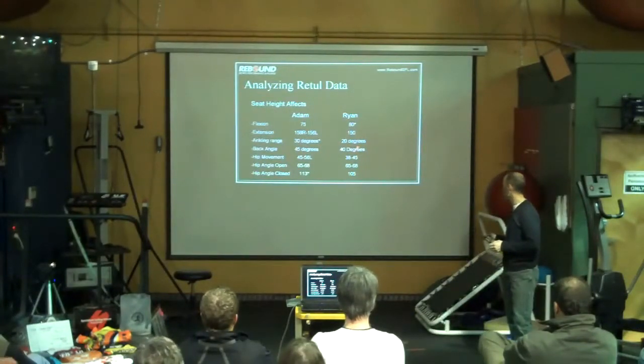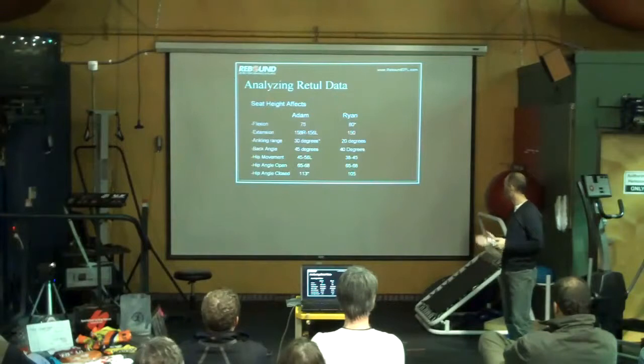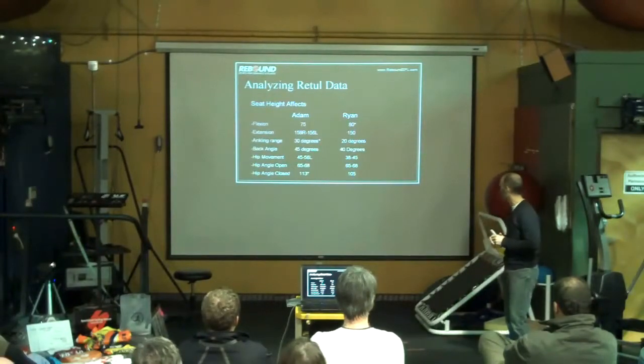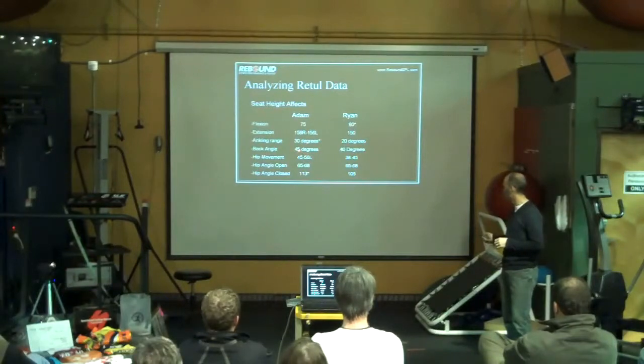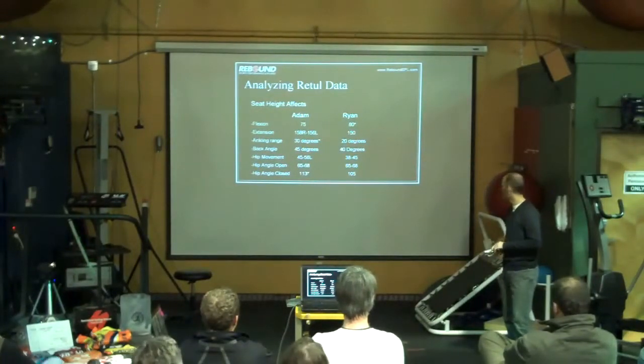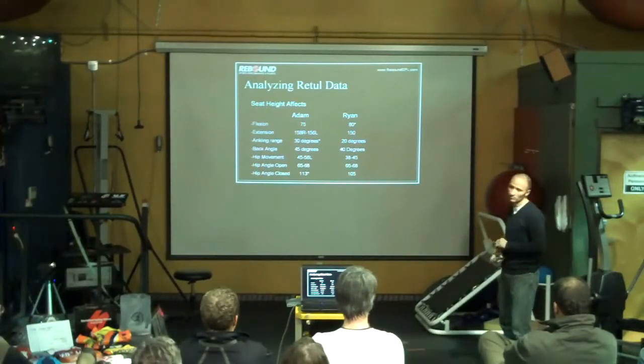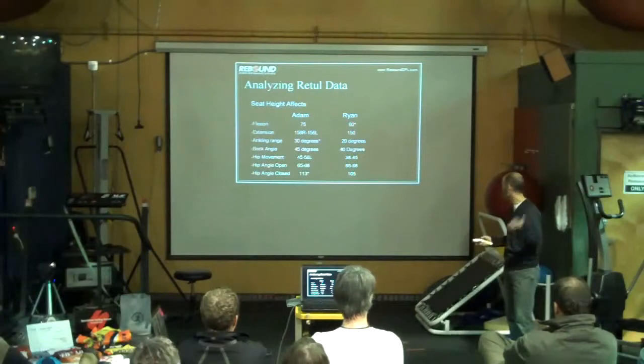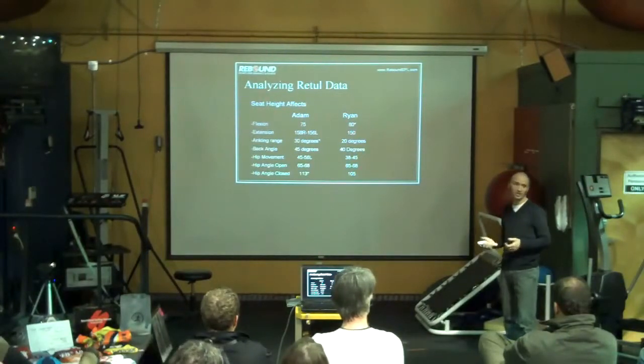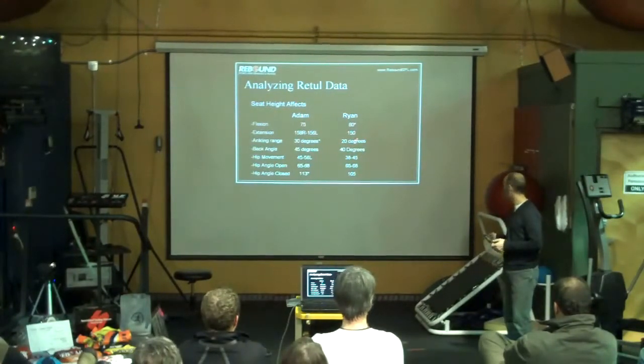Whereas Ryan is riding a pretty constant, both sides are 20 degrees. So this is also kind of taking into account both sides. Their back angles, what Timmy just talked about. Adam is riding what we would consider kind of a relaxed road bike fit at 45 degrees, whereas Ryan is kind of more, I would say, in line with most of the pros in the pro peloton racing in Europe at 40 degrees, if they can handle it with their back. So that's kind of the range there. They're one on either one of the ranges there.